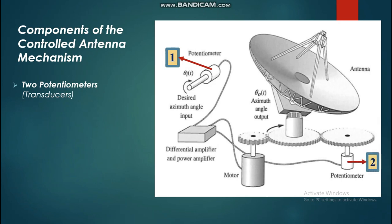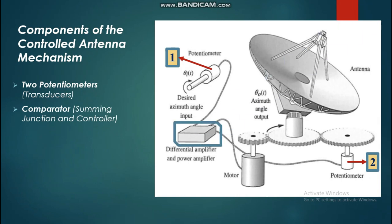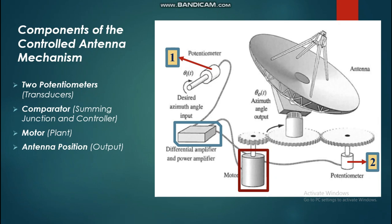The second potentiometer is our feedback transducer, which monitors the actual position of the antenna and sends feedback to the controller. The second major component is the comparator or summing junction, where signals from both transducers are compared and sent to the controller as an error. The controller sends a signal to the plant — in this case, a motor — which rotates in the appropriate direction to move the antenna to its desired position.